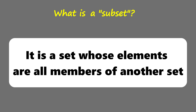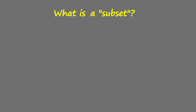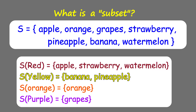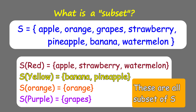What is a subset? It is a set whose elements are all members of another set. Let's consider our previous example — your favorite fruits. These fruits can be categorized according to their colors. The red fruits are apple, strawberry, and watermelon. The yellow fruits are banana and pineapple. The orange fruit is orange, and the purple fruit is grapes. These are all subsets of S.